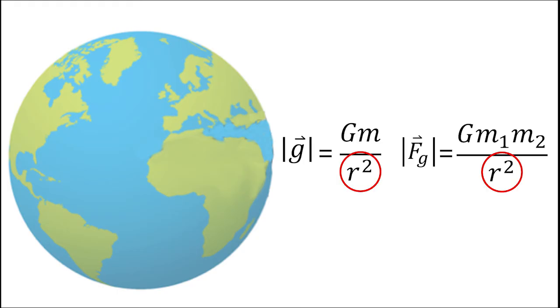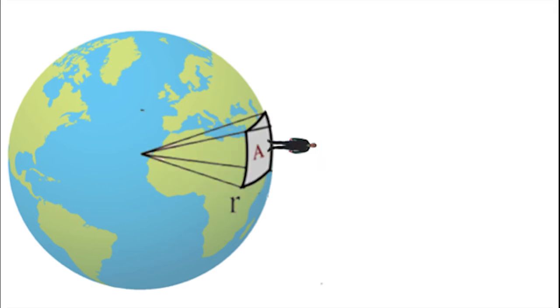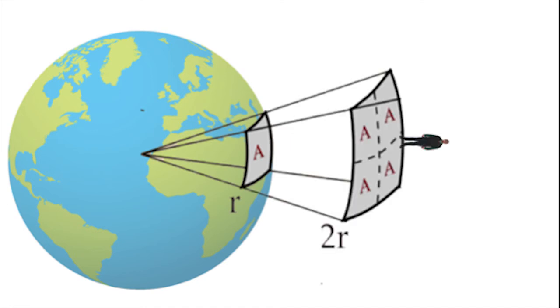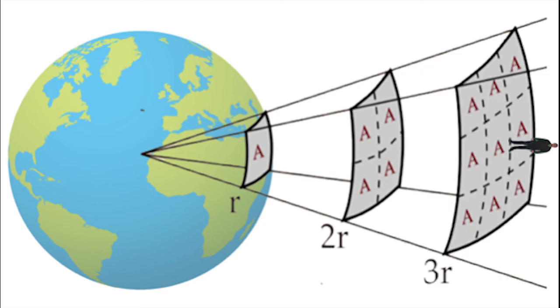Both of these equations have that 1 over r squared term, and that means that they have an inverse square relationship. It means the further away you get from an object making a gravitational field, the weaker the field is. But if you get twice as far away, the field is 4 times weaker. And if you get 3 times further away, the field is 9 times weaker.